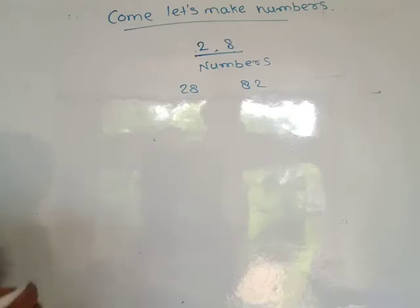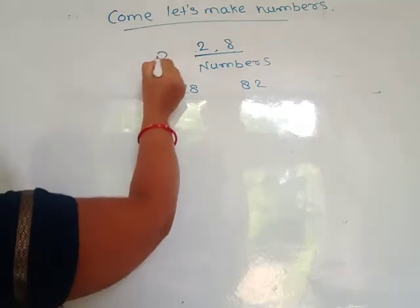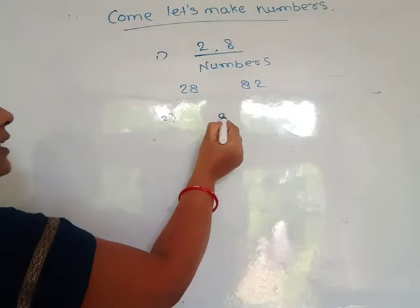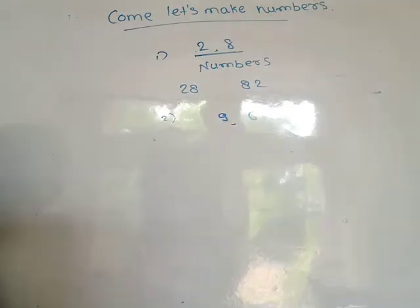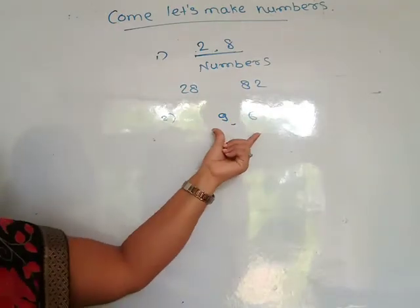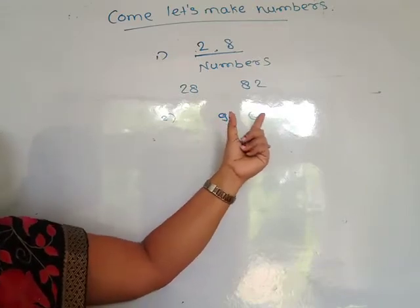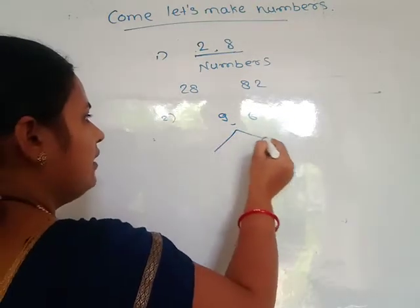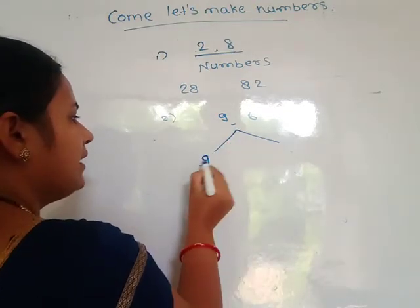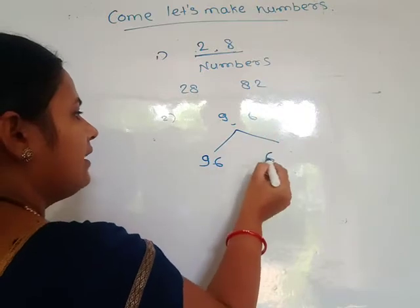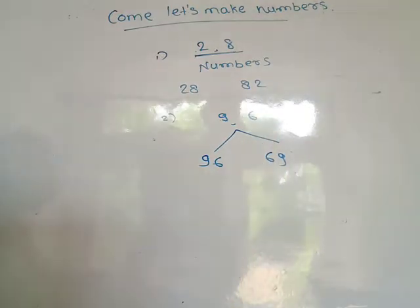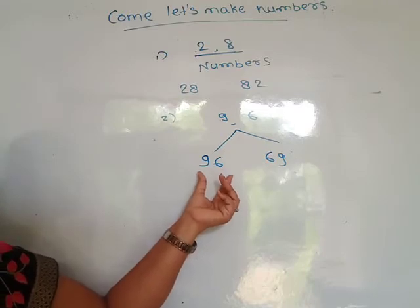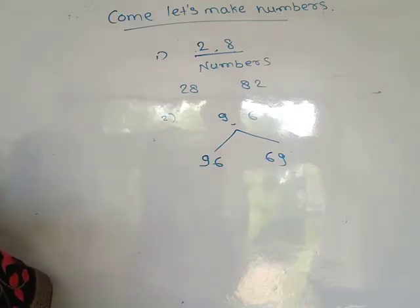The second example: suppose the digits given are 9 and 6. By using these two digits you form two numbers. The first number is 96 and the second number is 69. So two two-digit numbers are formed: 96 and 69.